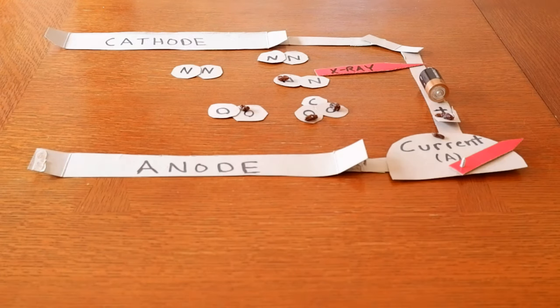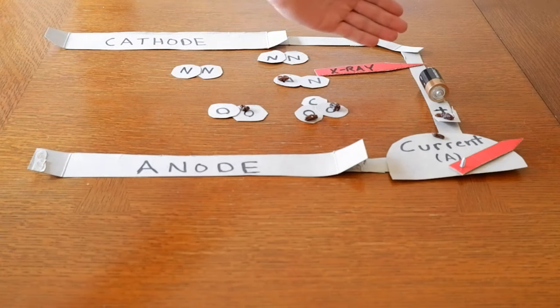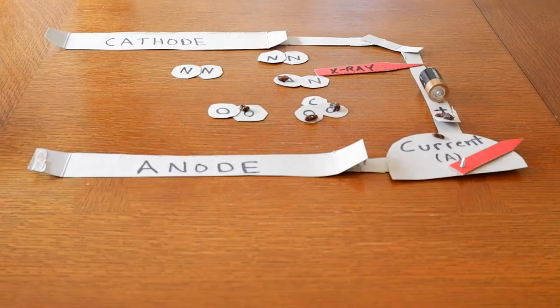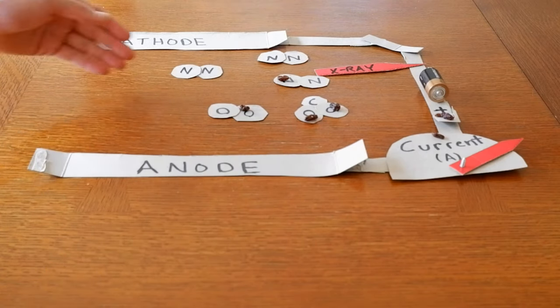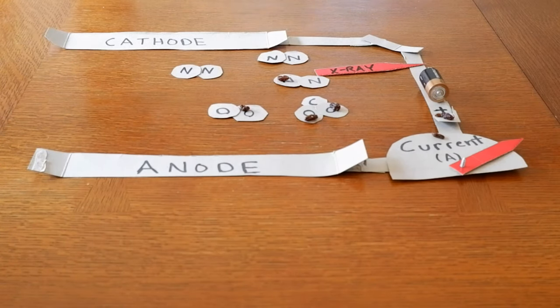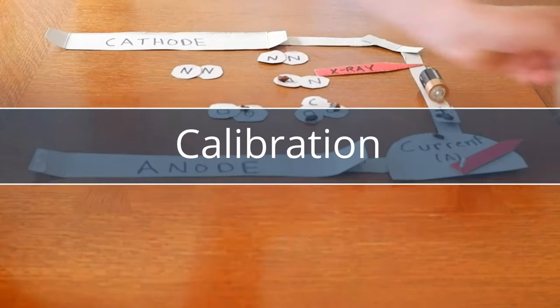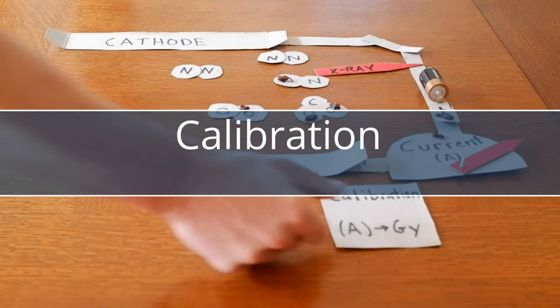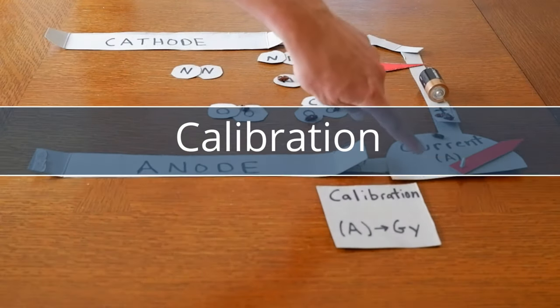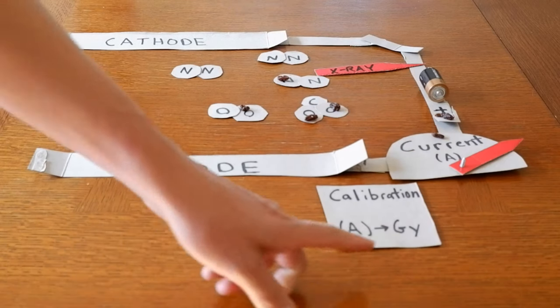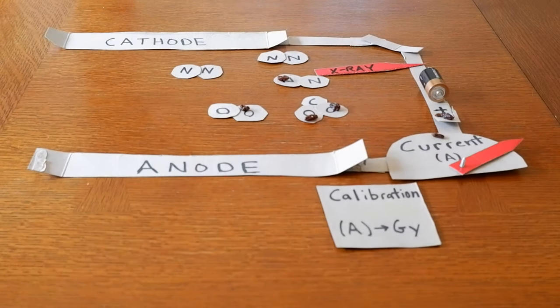And that is related to the radiation dose, which would actually be occurring due to these x-rays. A calibration factor is used to go from the current, which is measured in amperes, to for instance in CT dosimetry, to a value in gray.